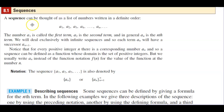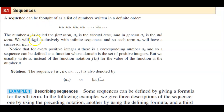In section 8.1 we'll be talking about sequences. A sequence can be thought of as a list of numbers written in a definite order, starting with a subscript 1, a subscript 2, all the way to a subscript n. The number a subscript 1 is called the first term of that sequence, a subscript 2 is the second term, and in general a subscript n is the nth term.